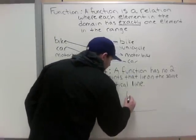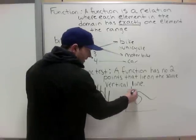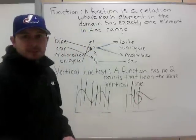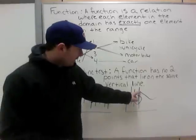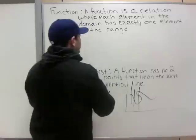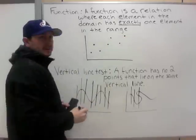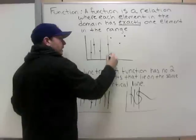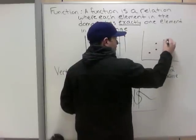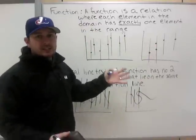A non-function might look like this. If I start drawing vertical lines, it looks like a function because it only crosses once — but then this one crossed three times. The rule is it has no two points that lie on the same vertical line; this vertical line has two points on it, so it's not a function. If I draw a graph with just dots, a function has each vertical line crossing only once. If a vertical line goes through two dots, it's not a function. The vertical line test is how we test functions.